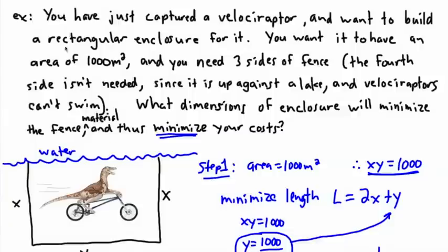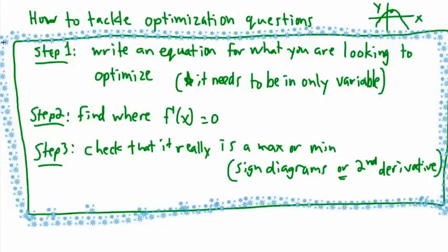In the last video we were looking at how to work with optimization — when you optimize something you're trying to minimize or maximize it. The key thing is that at a maximum or a minimum, the derivative is zero, because the tangent line is flat with a slope of zero. So we need to first find where the derivative is zero, and then check that it really is a max or a min.